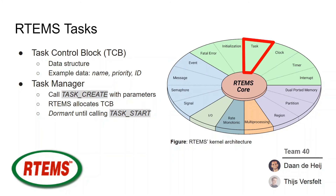Now let's move on to the topic of tasks — how are tasks created and managed in RTEMS? A very important data structure are task control blocks, abbreviated as TCB. A task control block is a data structure containing all necessary information related to executing a task, such as the task's name, its priority, or its ID. Tasks in RTEMS are created using the task manager by calling the task create function with the desired parameters. After a task is created, RTEMS allocates a task control block and the task is in a dormant state until it is made ready to execute using the task start directive.